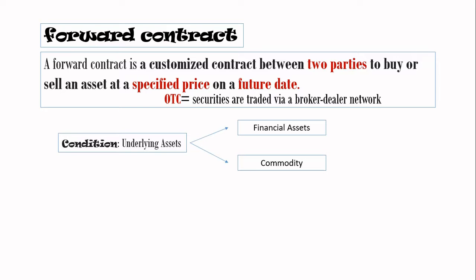These underlying assets can be of two types: either financial assets or commodities. A financial asset is a liquid asset that gets its value from a contractual right or ownership claim — examples include cash, stocks, bonds, mutual funds, and bank deposits. Commodities are everything that doesn't fall under financial assets, such as drinks like sugar, coffee, or orange juice; grains like wheat, soybeans, rice, or corn; animals like cattle or pork; or raw materials like cotton and lumber.